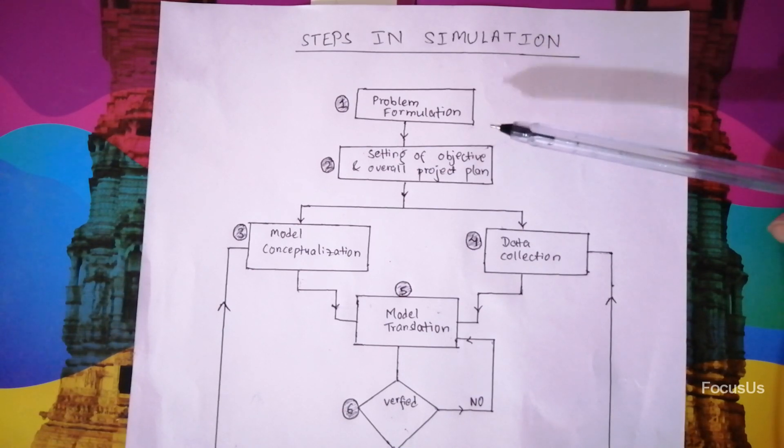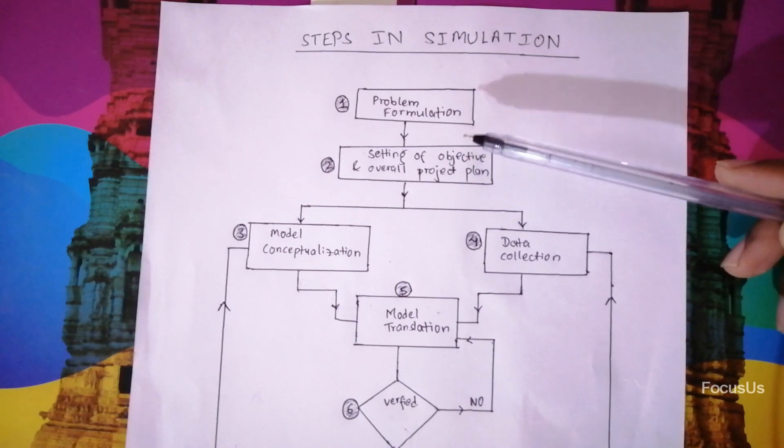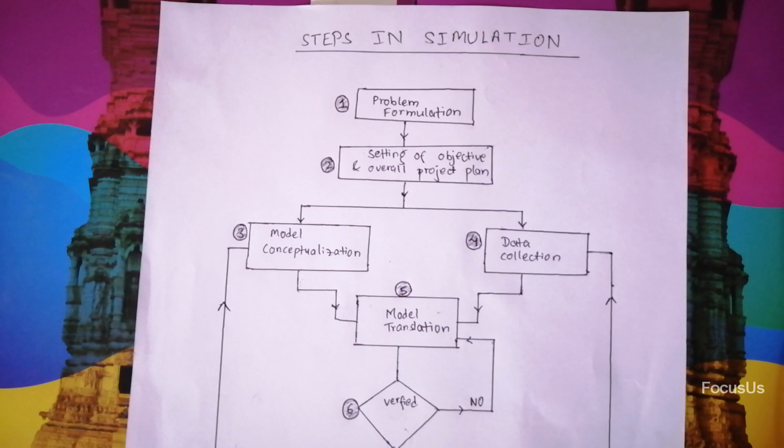In point two we have setting of objective and overall project plan. The objective indicates the question to be answered by simulation. At this step, a determination should be made concerning whether the simulation is right methodology or not. Assuming it's appropriate, then the plans should include the steps like alternative systems, simulation cost, time required and so on. Overall, you should set the objective and the plan should be proper.